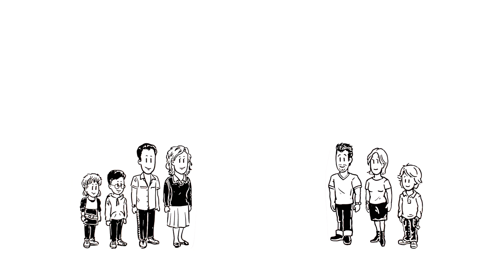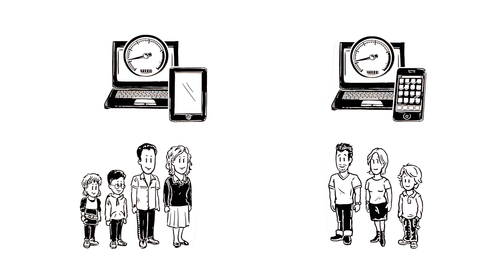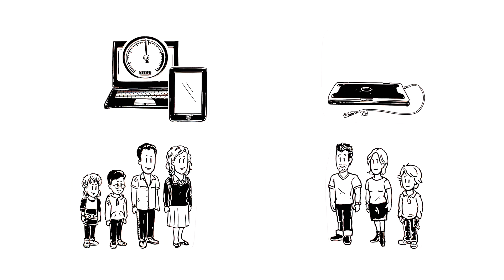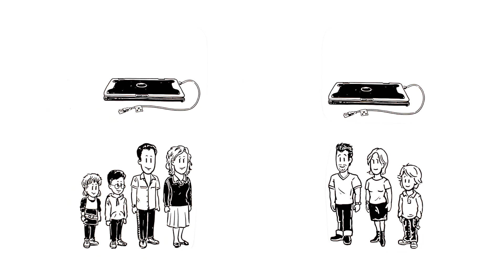Even when both families are surfing the net at the same time, the internet connection is quicker than before. But when the Johnsons are offline, the Millers automatically benefit from their internet access. If the Millers are offline, it works the other way around.